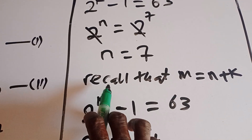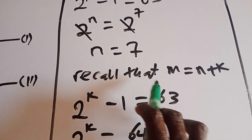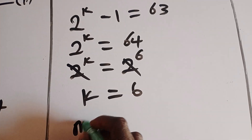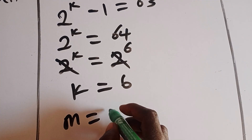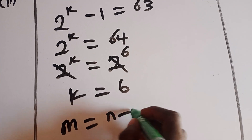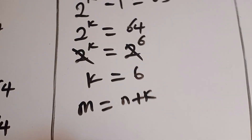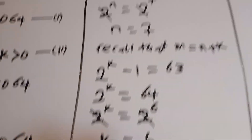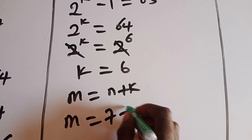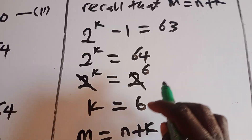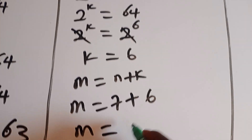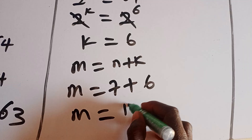From here, recalling that m equals n plus k, our m will be equal to n plus k. With n equal to 7 and k equal to 6, therefore our m will be equal to 13.